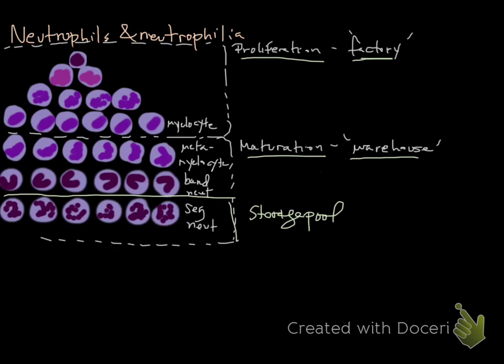So when we talk about the storage pool and the size, most animals have the similar, so dogs, cats, and horses all have a similarly sized storage pool, whereas cows and cattle, they have a small neutrophil storage pool. So that's what we're going to talk about when we get to ruminants.